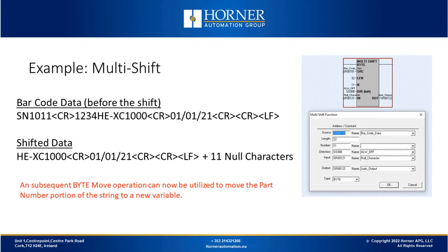Let's continue with this example. Before the shift, the barcode data looks like: SN1011 as the serial number, followed by a carriage return, a 4-digit numeric field, and then the part number HE-XC1000, followed by a carriage return, a date field, and more carriage return and line feed characters. After shifting 11 places, the part number is at the beginning of the data. We still need to do subsequent operations — we'll use a byte move instruction to move the 9 bytes of the part number over to its own variable.